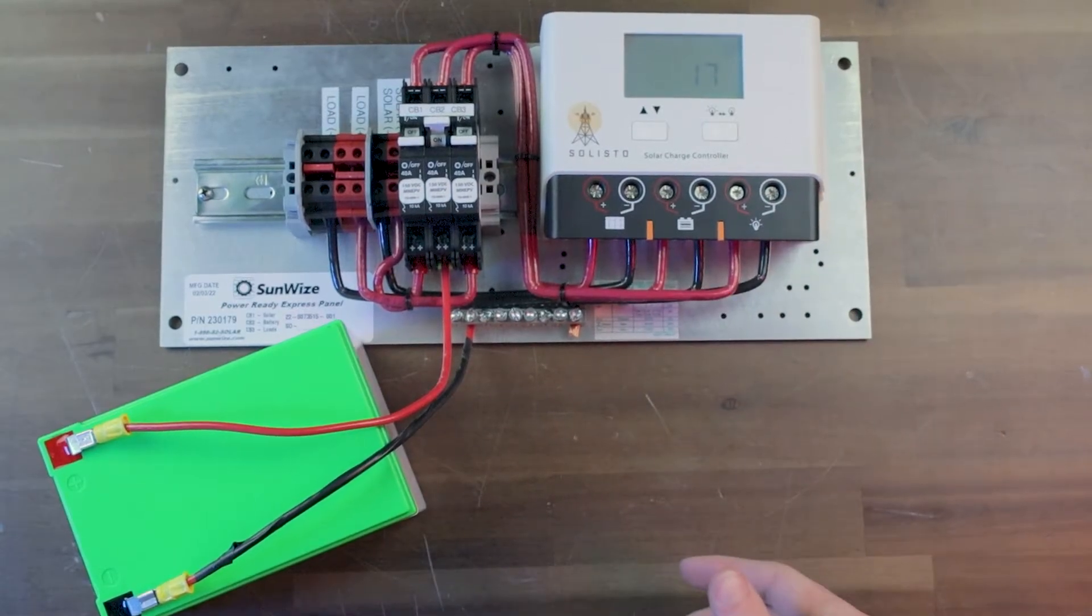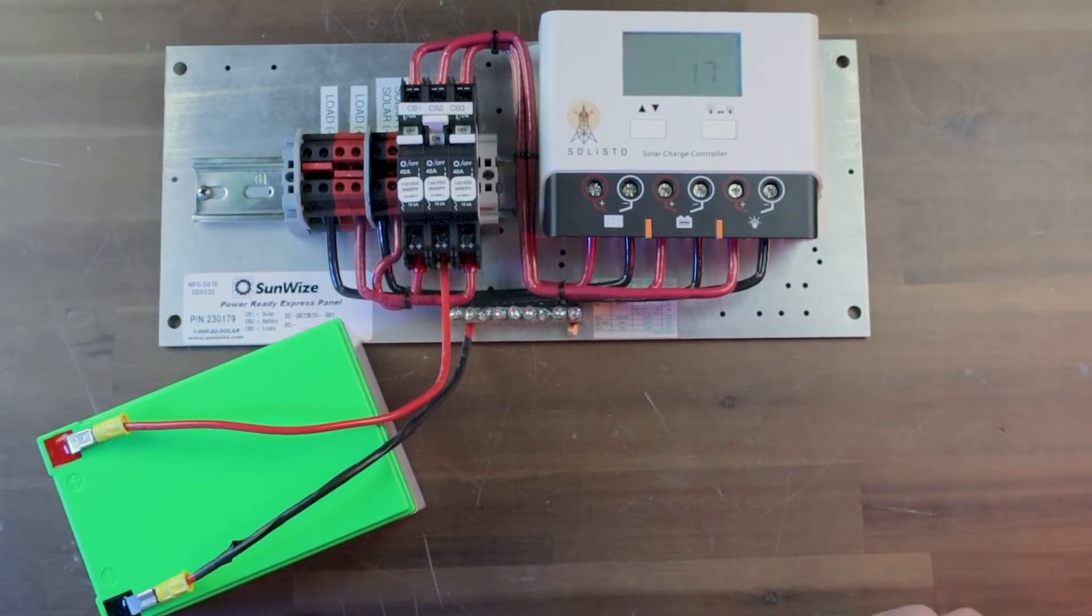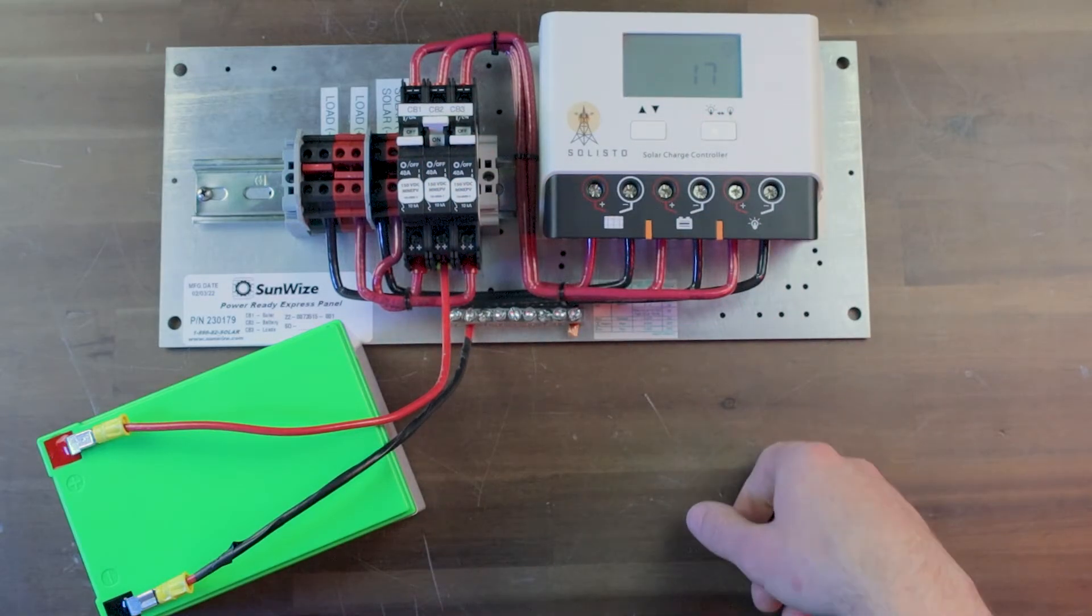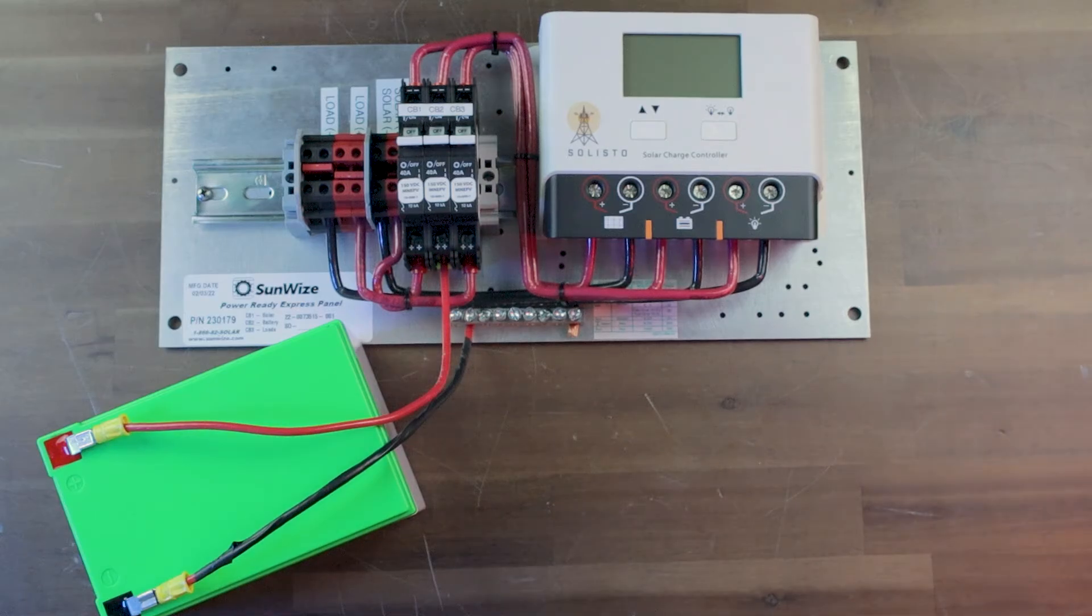Now the charge controller is in normal load working mode and you are good to either turn on your solar and load breakers to resume normal system operation, or you can power down the charge controller.